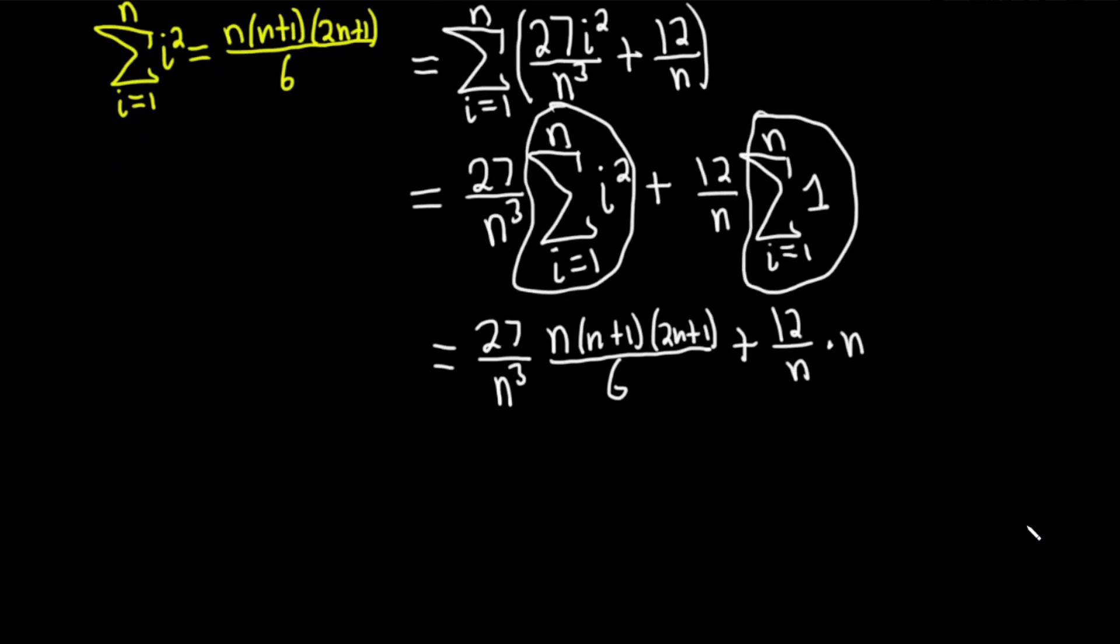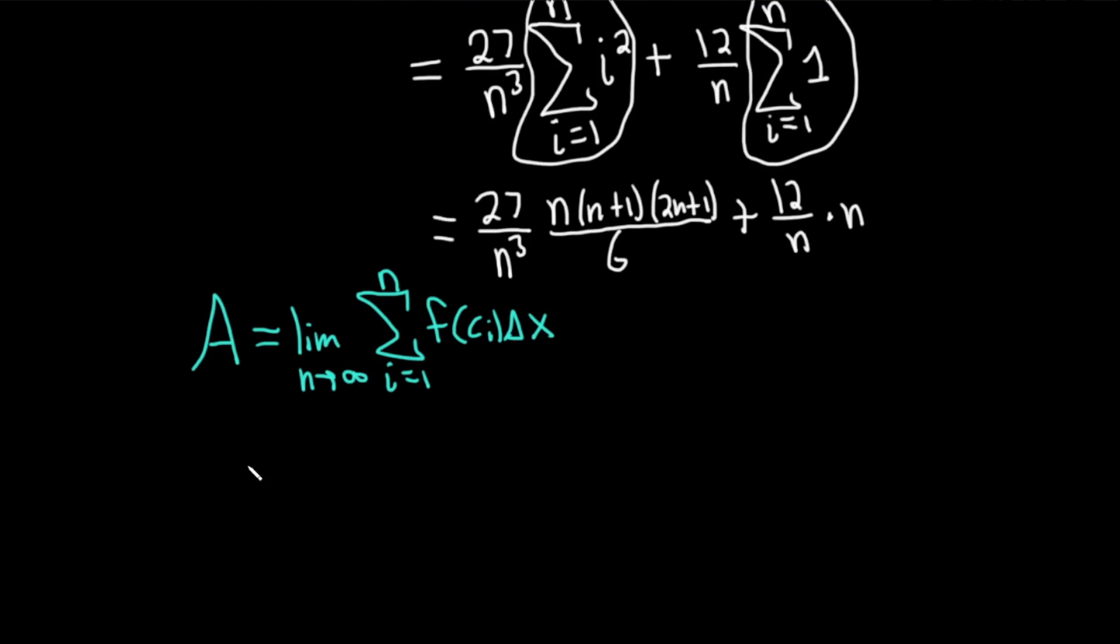Now let's go ahead and take the limit. So let's go to blue because now we want the limit. Actually, let me write limit. Let's formalize it. So area equals the limit as n goes to infinity of the finite sum, this is the definition, as i runs from 1 to n of f(c_i) times Δx. The more you write it, the more you memorize it. So A equals the limit as n approaches infinity.